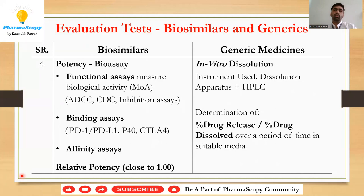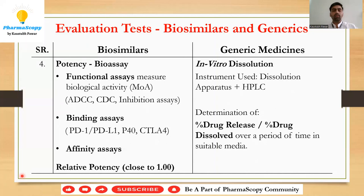All bioassay data is represented as relative potency — the ratio of the EC50 of the RLD compared to the EC50 of the test product. This ratio should be close to 1. The most stringent acceptance criterion is 0.95 to 1.05, which determines whether the biosimilar is behaving the same as the RLD.